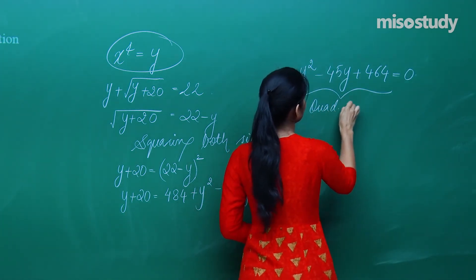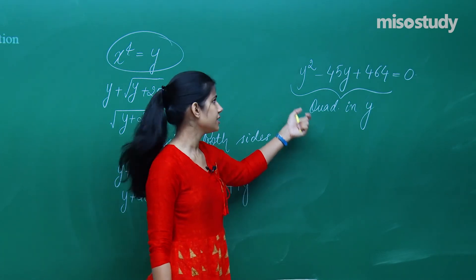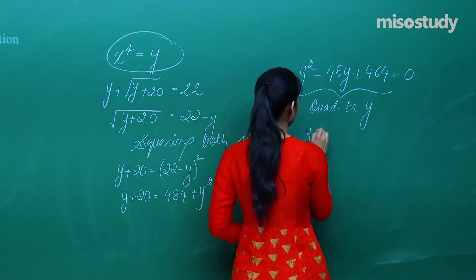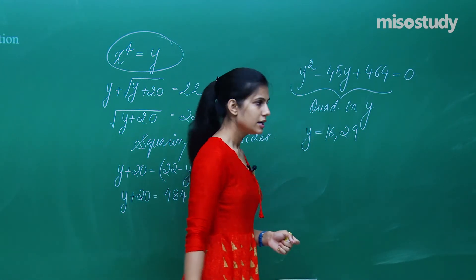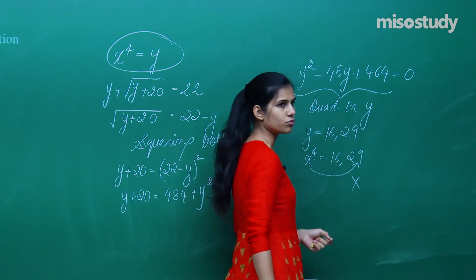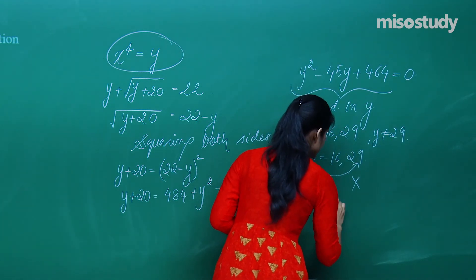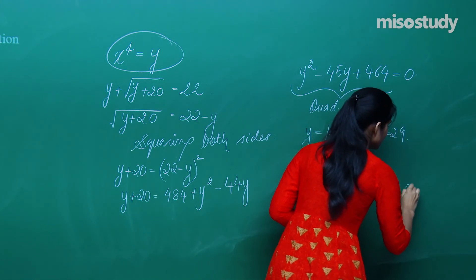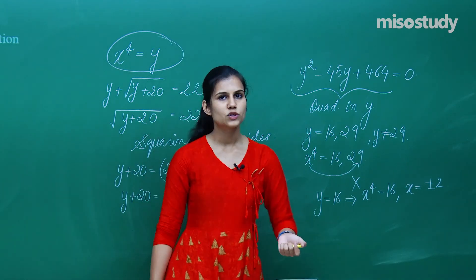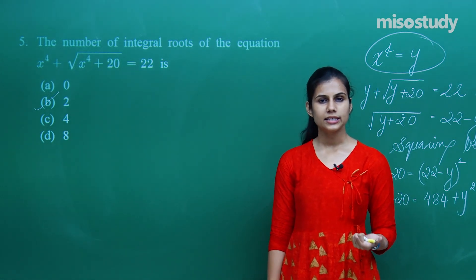This quadratic in y gives y = 16 and y = 29. Since y = x⁴, we need x⁴ = 16 or x⁴ = 29. There is no integer x for which x⁴ = 29, so y = 29 is rejected. From x⁴ = 16, we get x = ±2, since (±2)⁴ = 16. So x can take two values: +2 and -2. Go through all the questions carefully. That is it from my side, thank you.